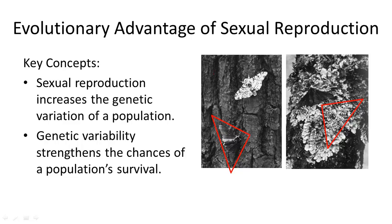Since sexual reproduction is much more costly to an individual energy-wise, it must have a distinct advantage over asexual reproduction in order for animals to continue it. That advantage is the increase in variations, or genetic diversity, of a population.